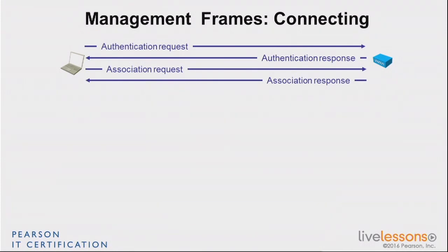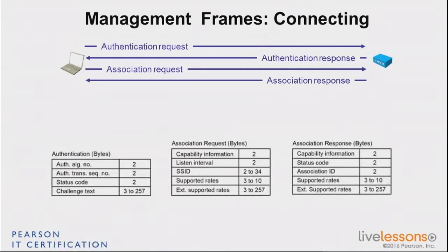Once authenticated, you say: I want to join your cell. That's the association request, and the AP responds: here we go, this is your association ID — you are station number five in my cell. Looking at the authentication frame, the body only matters if there is additional security; if it's open, it's simply a question or a response with a success status. The association request is more complex: you declare the SSID you want to join, the data rates you support, and your capabilities. There is a lot of detail beyond the scope of CCNA.